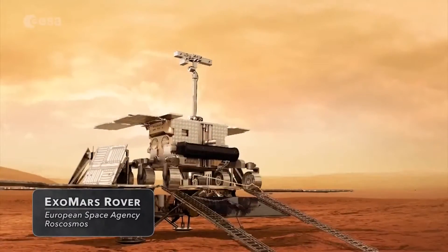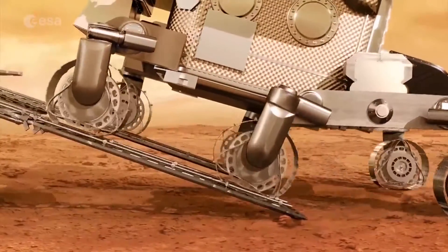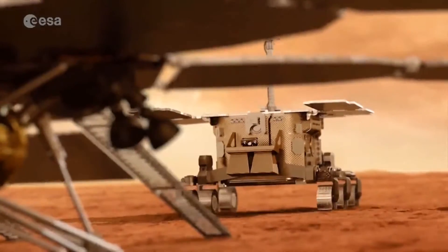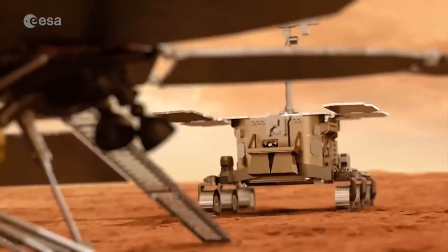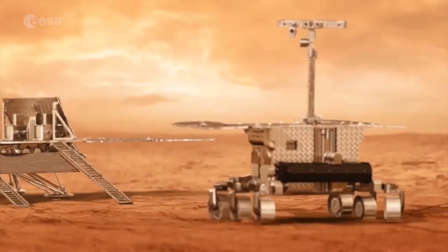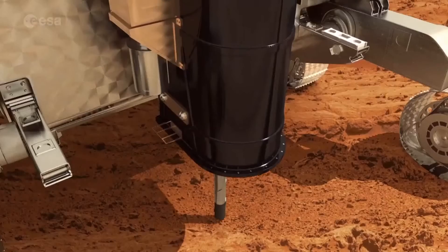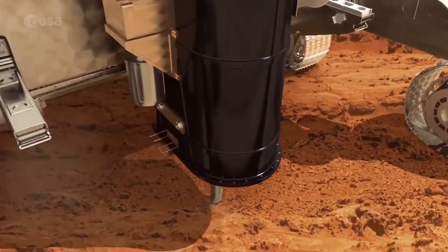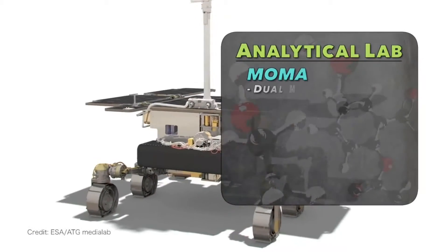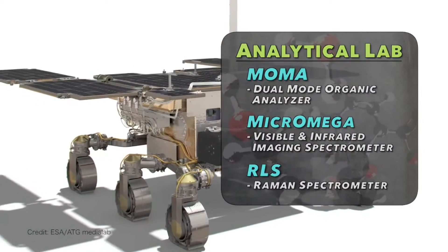As it descends from its landing platform, ExoMars will embark on an enterprising mission to uncover buried signs of past or present life. The Martian surface is a harsh environment bombarded with cosmic radiation, but the subsurface could offer better protection. For this reason, ExoMars is equipped with an extending drill that can retrieve samples from up to 2 meters below the surface. Studying these samples will be the job of the Analytical Lab, a trio of instruments designed to search for the molecular fingerprints of life.